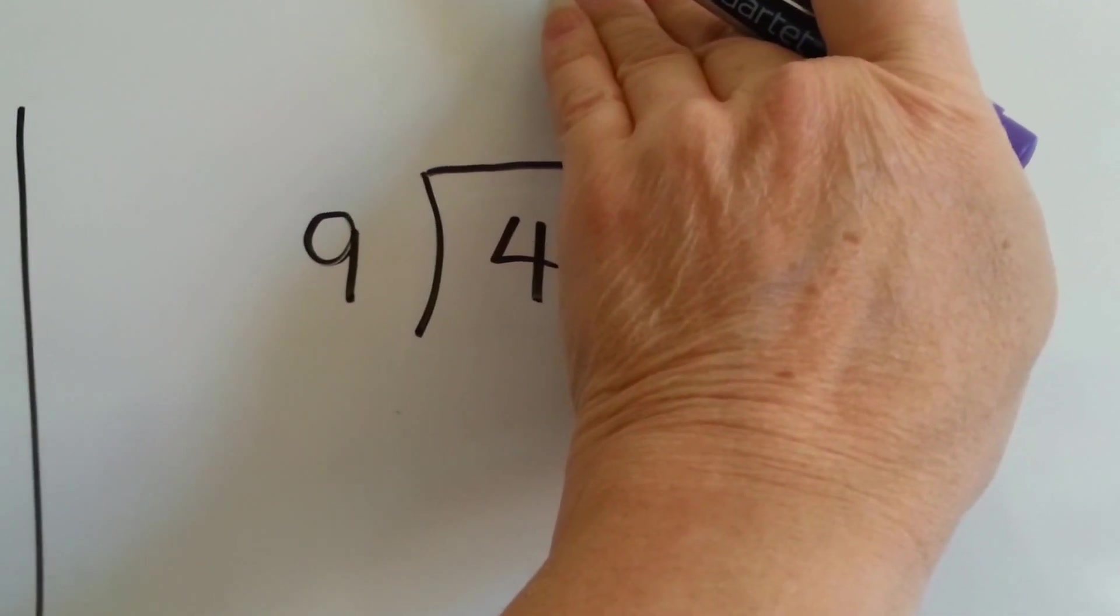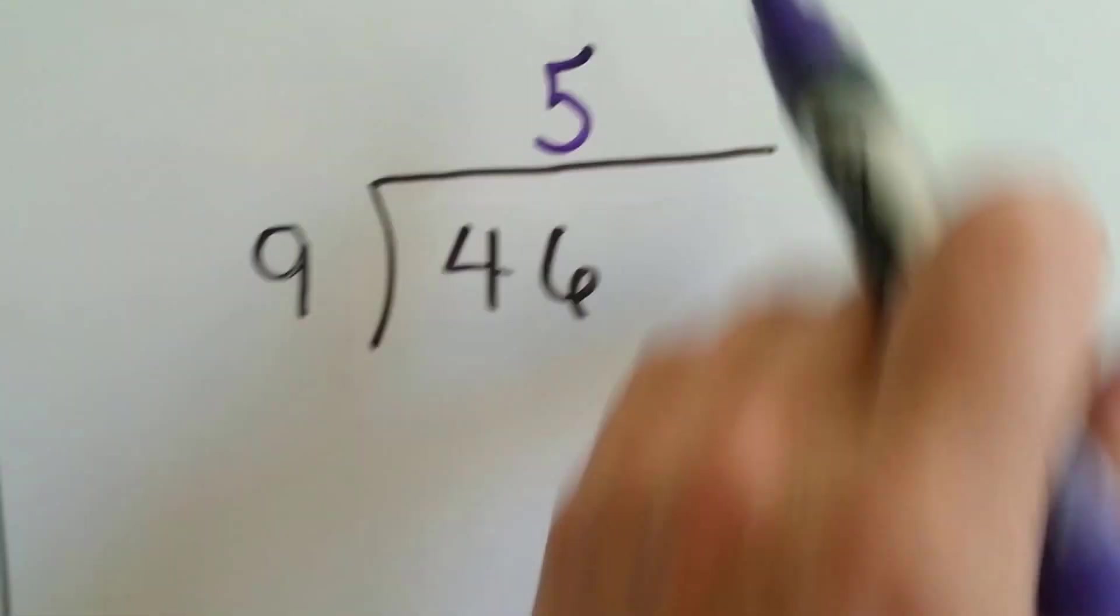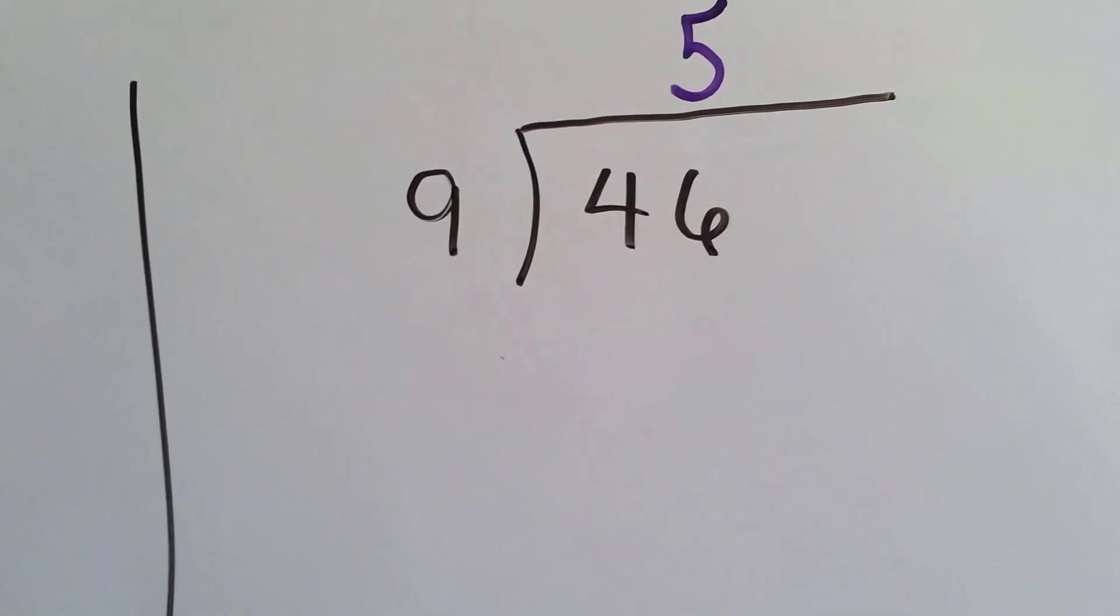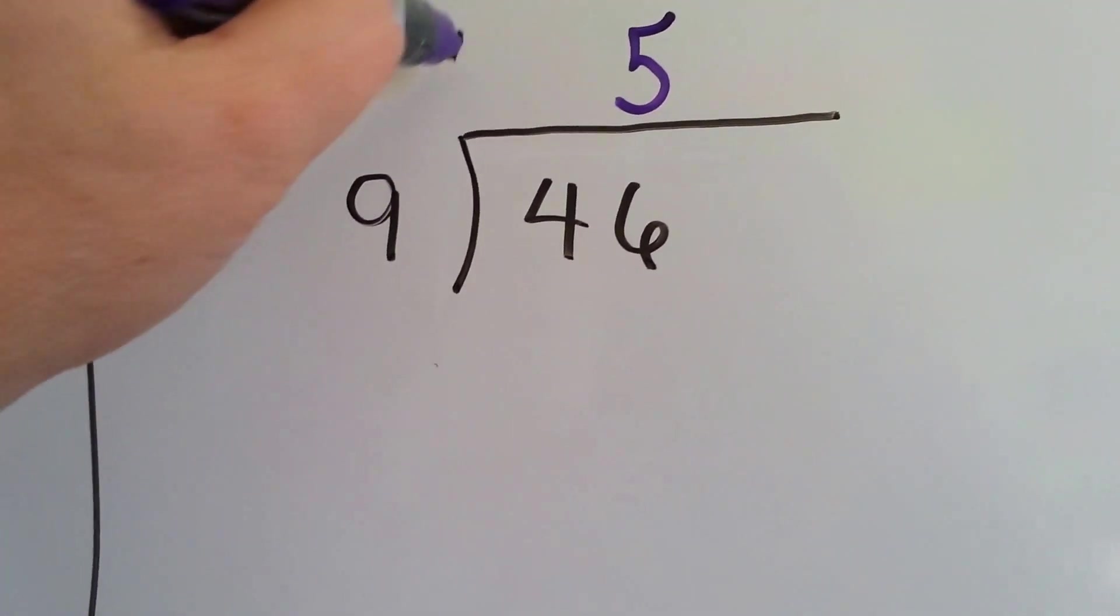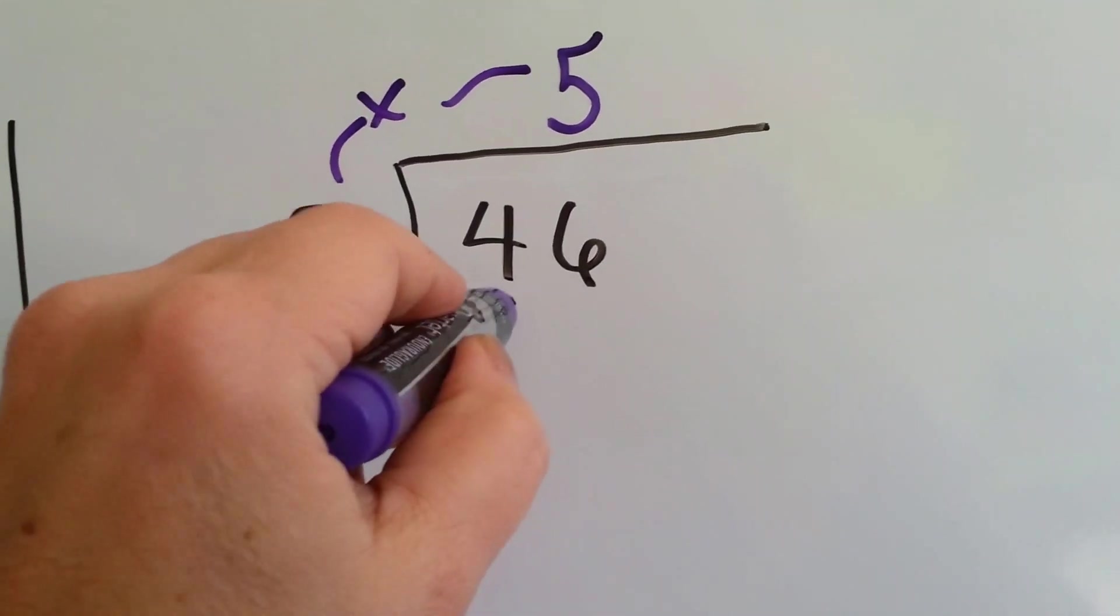So we put the 5 above the 6 here because we're not fitting 9 into 4. If we were, we would put the answer above the 4. But it won't fit in 4. So it fits in the 46. We put the answer above the 6 to show we're doing the entire 46. We do 9 times 5 right here. We multiply them and we get 45.